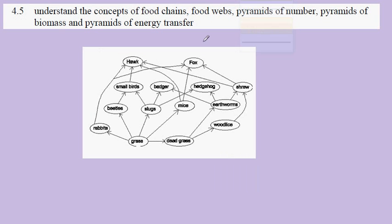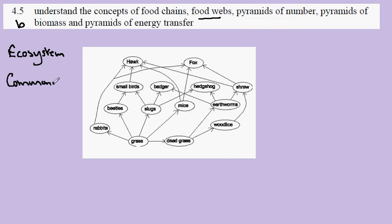GCSE Biology 4.5b, focusing on the importance of the food web. The food web allows us to provide a much better description of the ecosystem. You will recall that the ecosystem is composed of the community of organisms which are interacting. In this case, the interaction our food web describes is feeding.